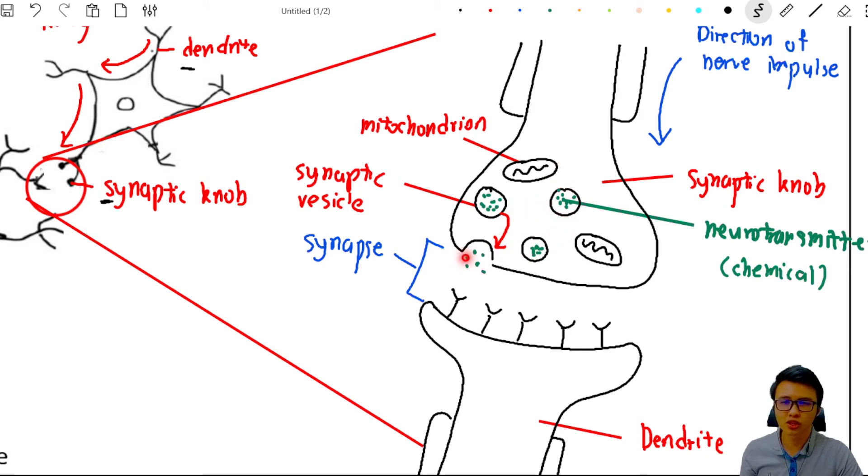So when the neurotransmitters are released into the synapse, this neurotransmitter will find the way to bind with the receptor from the dendrite. So this structure here is actually the receptor which is made to specifically bind to the neurotransmitter. So the neurotransmitter will diffuse across the synapse and bind to the receptor on the dendrite.